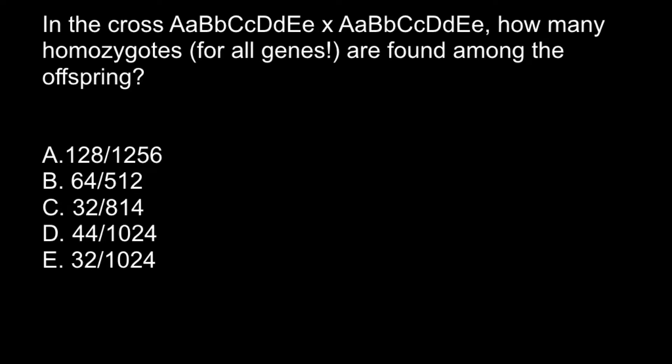Hello and welcome to Nikolai's genetics lessons. Today I have prepared an advanced Punnett square problem for you. In the cross of one pentahybrid organism with another pentahybrid organism, how many homozygotes for all genes are found among the offspring?